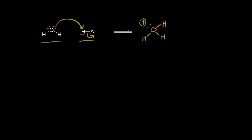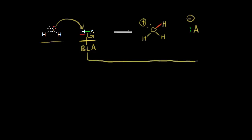These electrons in green right here are going to come off onto the A to make A minus. Let's go ahead and draw that in — we're going to make A minus, drawing these electrons in green and giving this a negative charge. Let's analyze what happened: HA donated a proton, so this is our Bronsted-Lowry acid. Once HA donates a proton, we're left with the conjugate base, which is A minus.